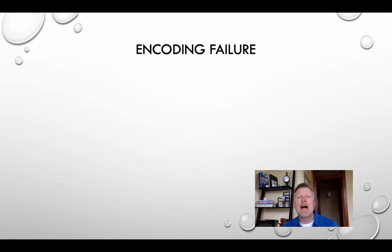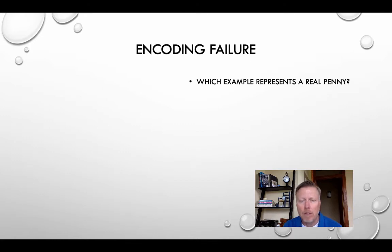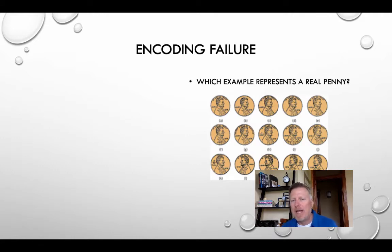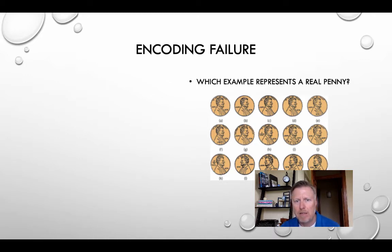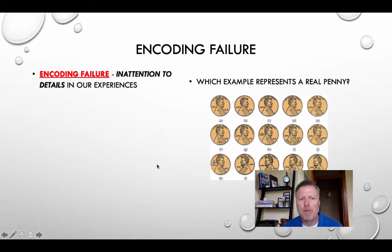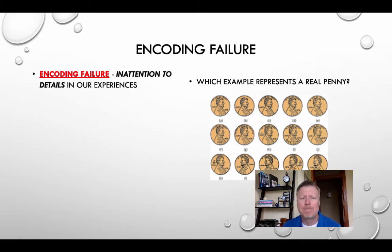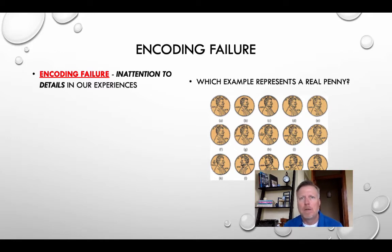The first and most common cause of memory failure or forgetting is encoding failure. An example that researchers like to use is: which of the following represents a real penny? If you look at those just for a moment, one of those might stand out to you as being the real penny. That is actually the first one right here. Most people don't typically know — 60 to 70 percent of people can't pick out the real penny, even though we've probably held hundreds of them in our hands over a lifetime.